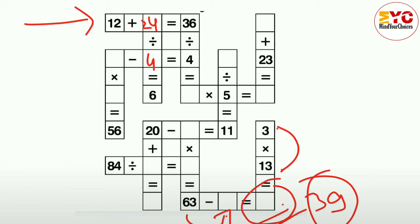So 24 divided by 4 is equal to 6. Now to fill this one, which number minus 4 is equal to 4? Definitely it will be 8. 8 minus 4 is equal to 4.